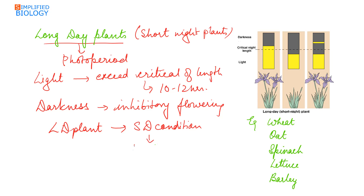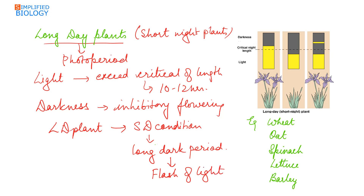If the long dark period is made shorter than the light period, or if a flash of light is given in the middle of the night, it will break the long dark period into two short dark periods, which can promote flowering. In long day plants, the light period should exceed the critical length; these plants do not flower under short day conditions where the dark period is longer than the light period.